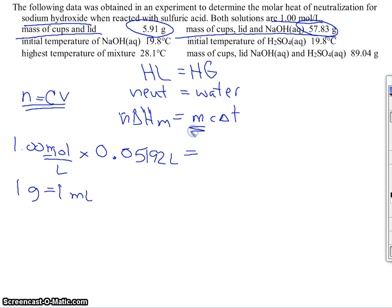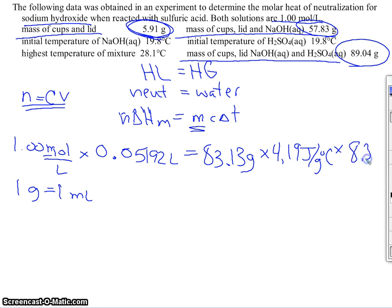The mass of the water combined is going to be looking at the entire solution. So the mass of the cups, lid, sodium hydroxide, and sulfuric acid, 89.04, minus the cups and lid gives us the mass of the entire mixture minus the cups and lid. That's what's absorbing the energy. So that's 83.13 grams. Then I can multiply by 4.19 joules per gram degree Celsius, same as water, times the temperature change that's stated at 8.3 degrees Celsius.